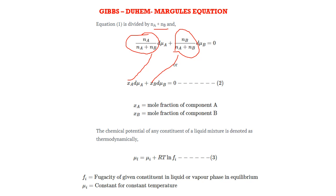The chemical potential of any constituent of a liquid mixture is expressed thermodynamically as: μ_liquid = μ_i + RT·ln(f_i). Here μ_i is a constant at constant temperature, and f_i represents the fugacity of the given constituent in the liquid phase at equilibrium.